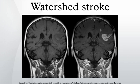A watershed stroke, or watershed infarct, is defined as ischemia, or blood flow blockage, that is localized to the border zones between the territories of two major arteries in the brain. Watershed locations are those border zone regions supplied by the major cerebral arteries where blood supply is decreased. Watershed strokes comprise approximately 10% of all ischemic stroke cases.